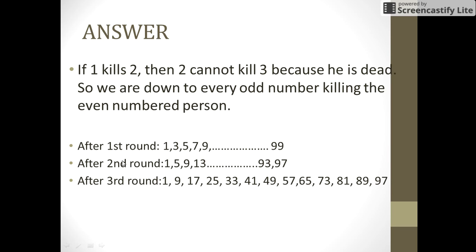So after first round only the odd numbered people would survive that is 1, 3, 5, 7 and so on till 99. Now 1 would kill 3 and pass the sword to 5. 5 would kill 7 and pass the sword to 9 and so on till 97 would kill 99 and again pass the sword to 1.